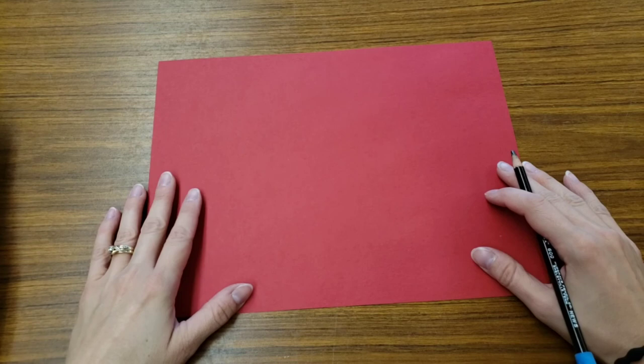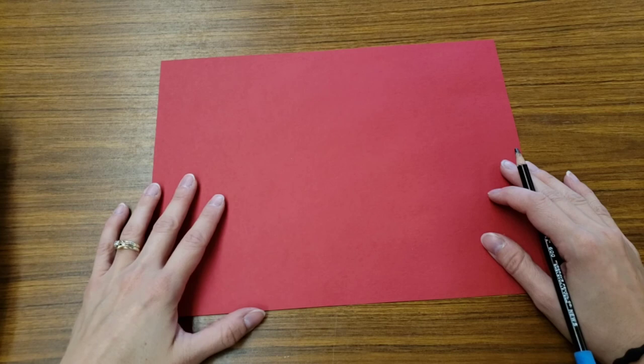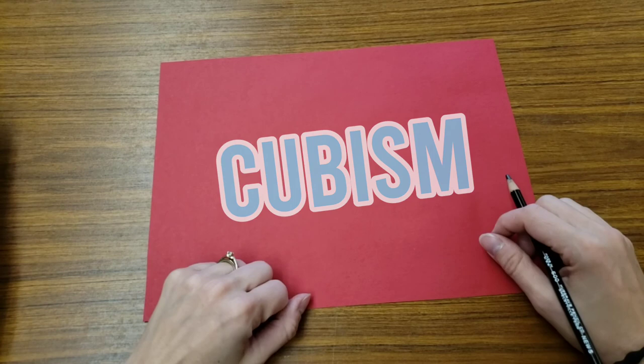Hello artists! Today we're going to make a picture inspired by Paul Klee. Paul Klee was an artist from Switzerland who did something called cubism. He made his pictures out of shapes.